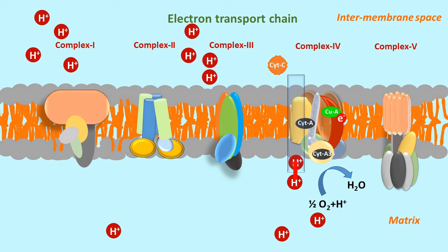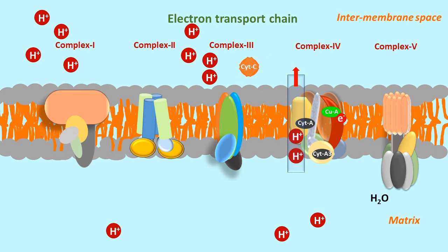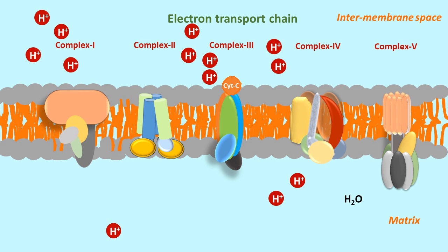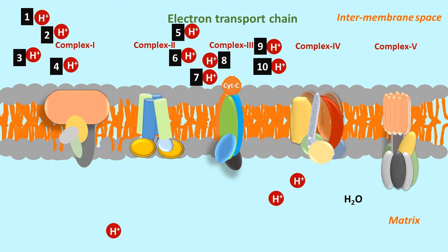In this last phase, another 2 protons are sent across the inner mitochondrial membrane toward the periplasm. This completes the journey of NADH electrons: 4 protons pumped at Complex 1, another 4 at Complex 3, and 2 protons at Complex 4. Thus, from one molecule of NADH, the electron transport chain pumps a total of 10 protons into the intermembrane periplasmic space.